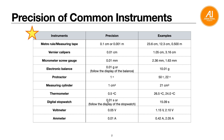A digital stopwatch is usually 2 decimal places, 0.01 s — or follow the display — so for example 15.09 s. A voltmeter has a smallest division of 0.05 V, so readings like 1.15 V or 2.10 V are 2 decimal places where the second decimal can only be 5 or 0. An ammeter has accuracy of 0.01 A, so for example 0.42 A or 2.05 A — also 2 decimal places.